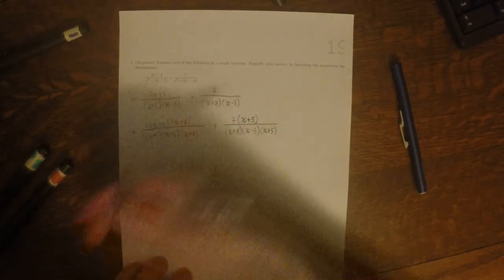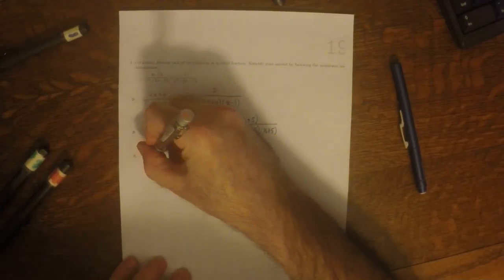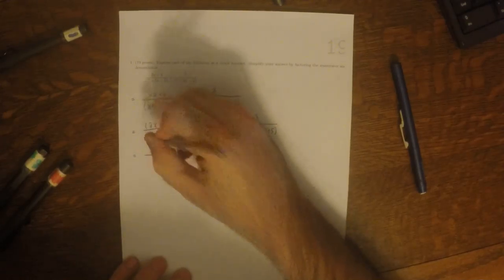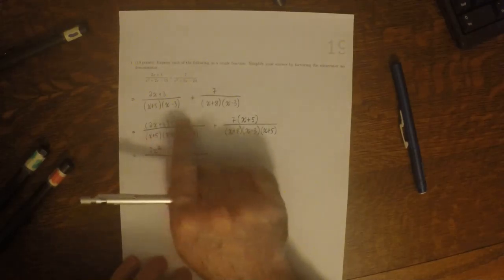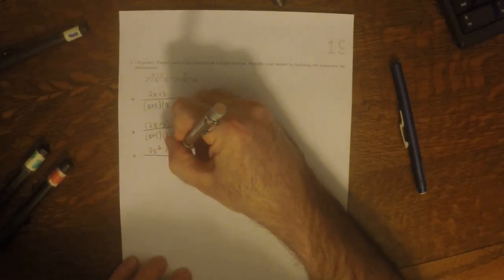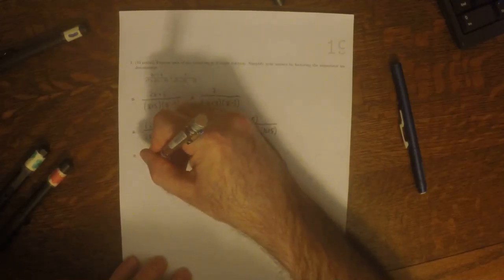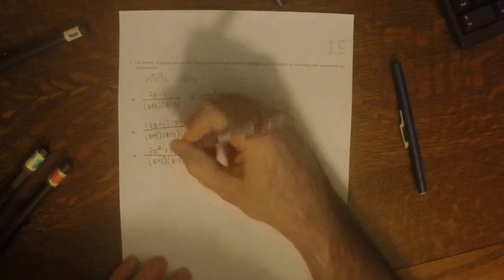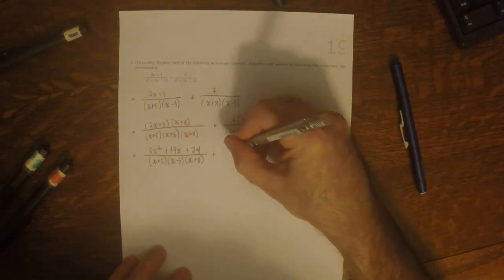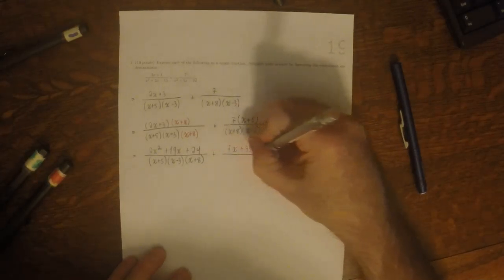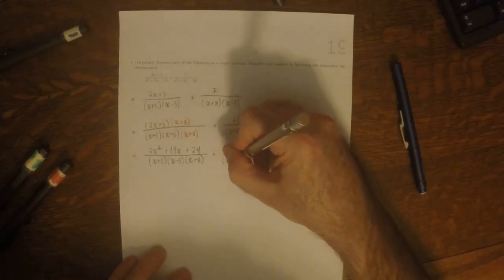So multiplying out the numerator of the first term, well FOIL that'd be 2x squared, and then the O and the I term, that'd be 2x times 8 is 16x and then plus 3x is 19x, so plus 19x, and then plus 24 over x plus 5 times x minus 3 times x plus 8.